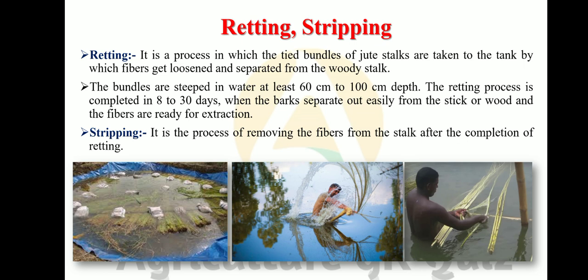Retting and stripping in jute: Retting is a process in which tied bundles of jute stalks are placed in a tank so that the fiber gets loosened and separated from the woody stalks. The bundles are steeped in water at least 60 to 100 centimeters deep. The retting process is completed in 8 to 30 days when the bark separates easily from the stick or wood and the fibers are ready for extraction.